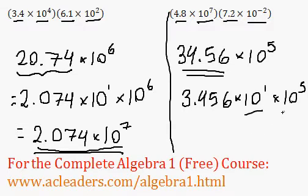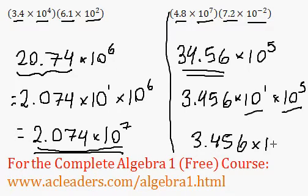So I need to multiply 3.456 by 10 to the 1. Now I can combine these guys. So the answer would be 3.456 times 10 to the 6 because 1 plus 5 is 6. And that's it.